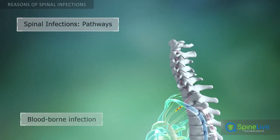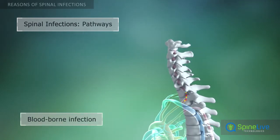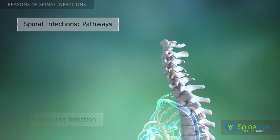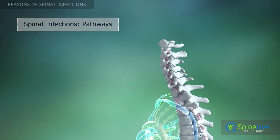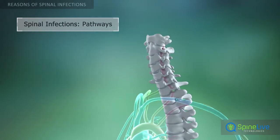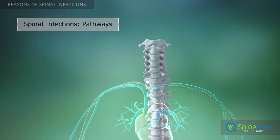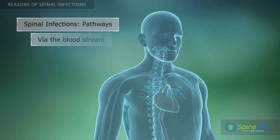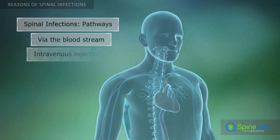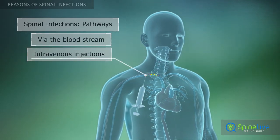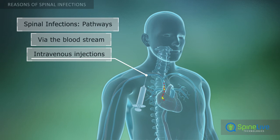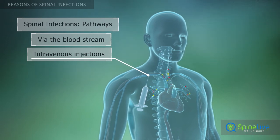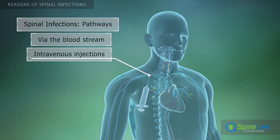Generally, microbes enter the spine through the bloodstream — for instance, through intravenous injections administered using contaminated needles.